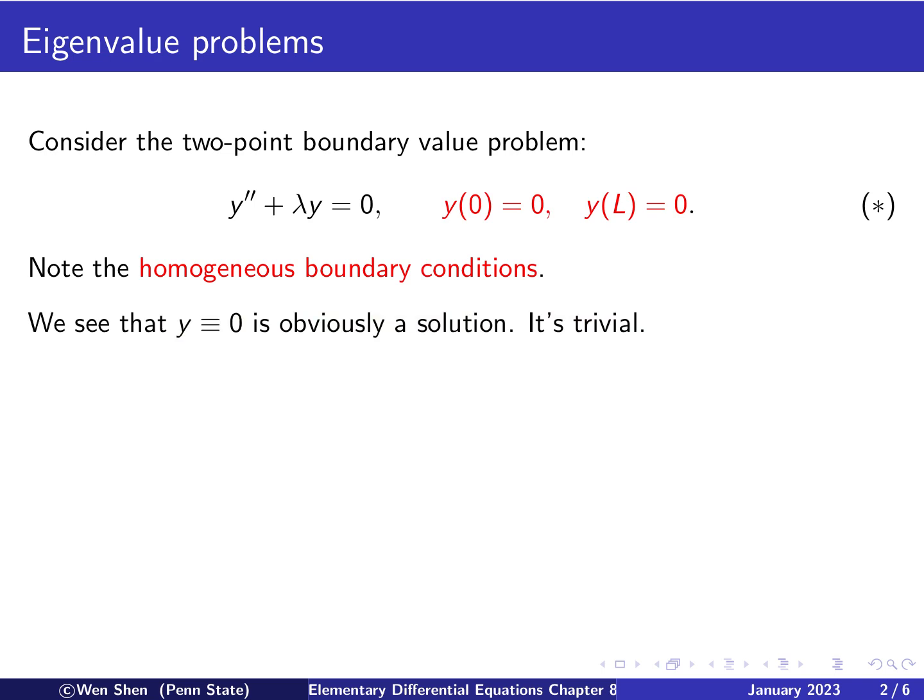So if one wants to solve this equation, equation star, what we call it, for some given lambda with these two boundary values, then we see immediately that y ≡ 0, constant 0. Identically 0 is obviously a solution, because then you have 0 and 0, and then the boundary conditions are automatically satisfied. So this is considered obvious and trivial. We call that a trivial solution, and usually we discard that one.